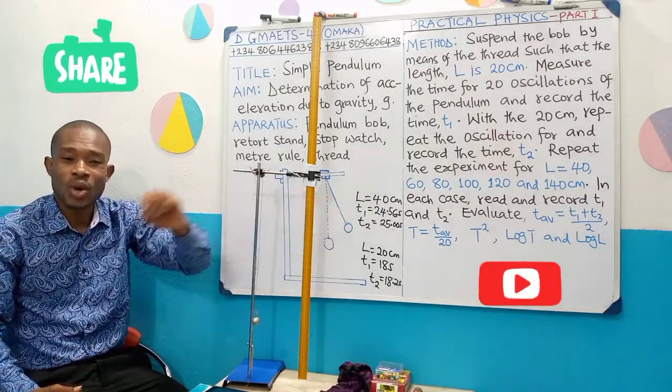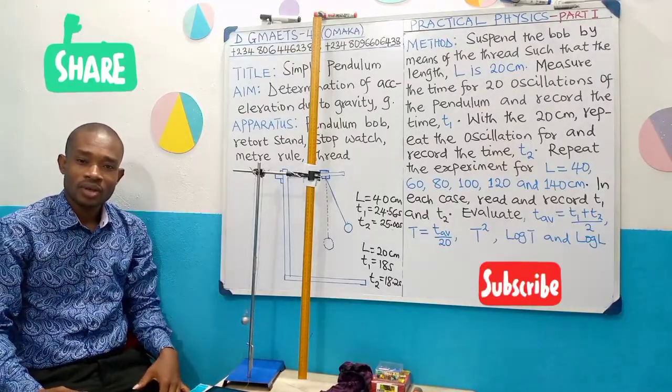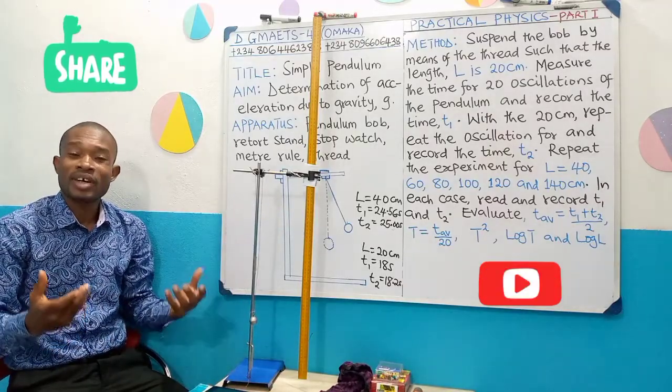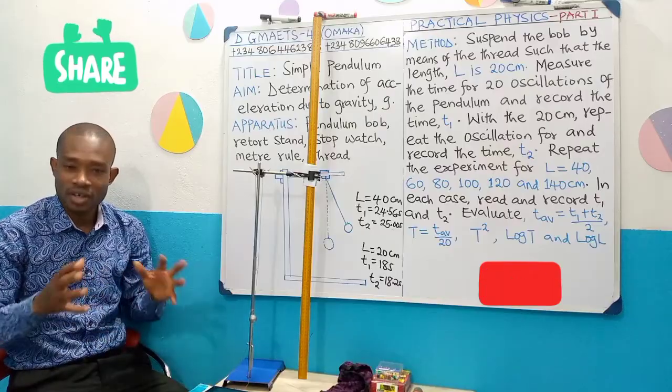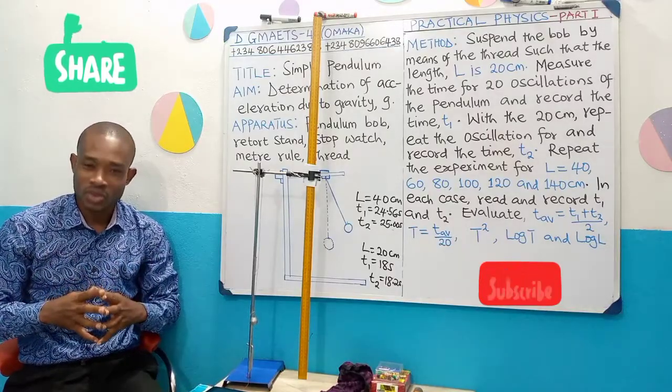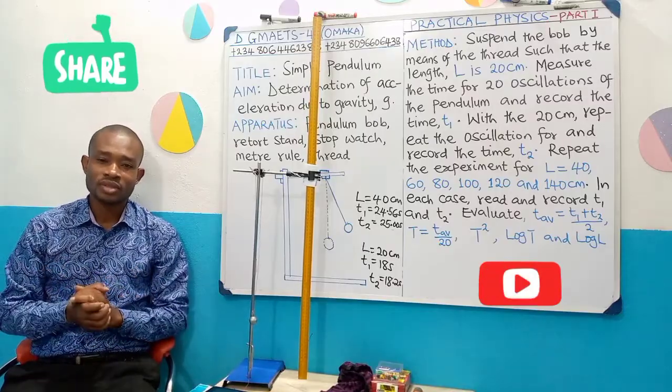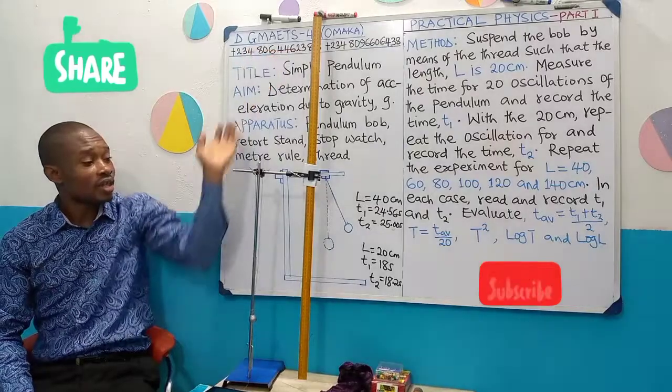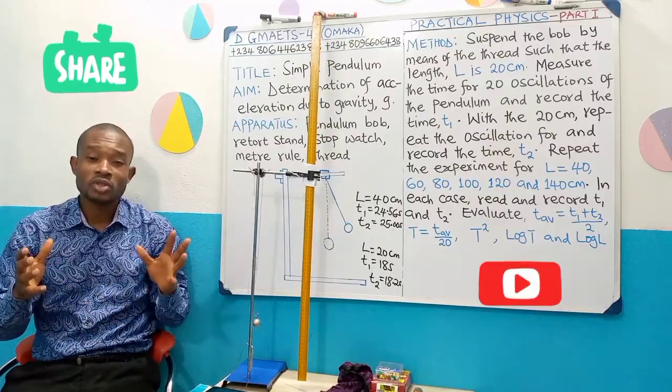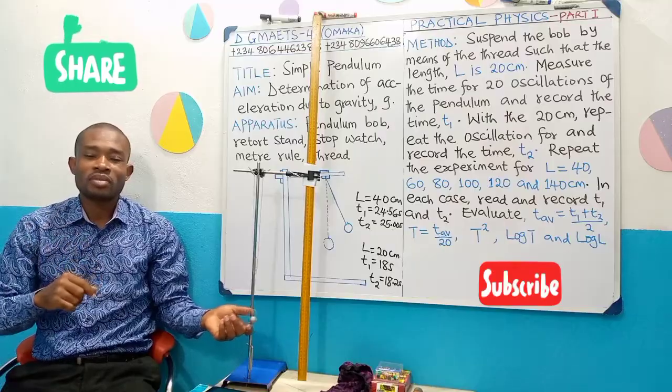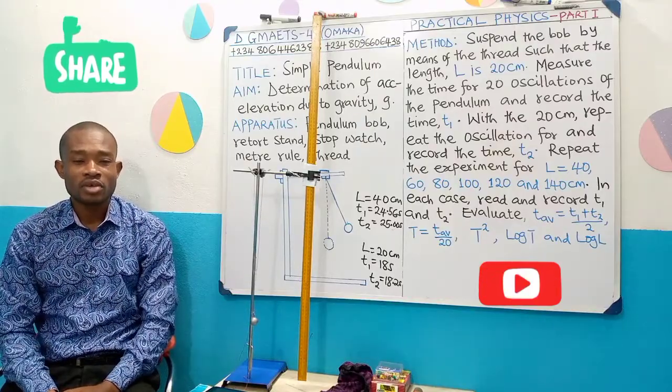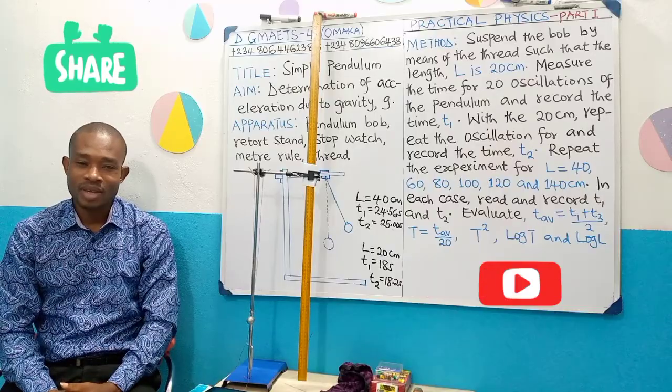Generating the table of value is just one plus one. In part two of this video, you're going to see how we would generate this table of value from the experiment. And part three, we'll be dealing with how to plot the graph and evaluate some necessary parameters as the examiner may demand of the students. I hope you enjoyed this practical section. Remember, contact the GMAS 41, our contact is here in order to register for our classes. Meanwhile, you can subscribe to our YouTube channel, turn on the notification bell so that once we upload a new video, you will be personally informed. Thank you very much. See you next time for part two of this simple pendulum experiment.